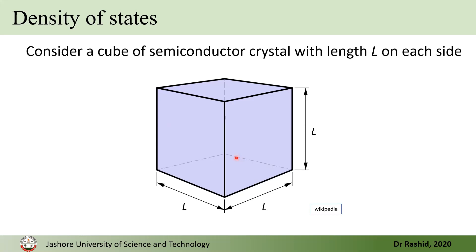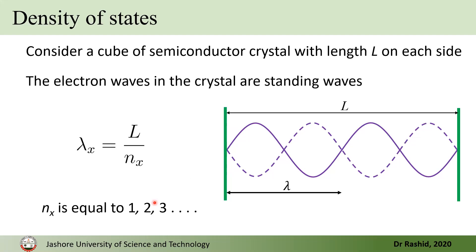Now, the electrons that are free to move within this system of length L will form standing waves. And the number of standing, the wavelength of the waves will be L by N, or N is an integer.